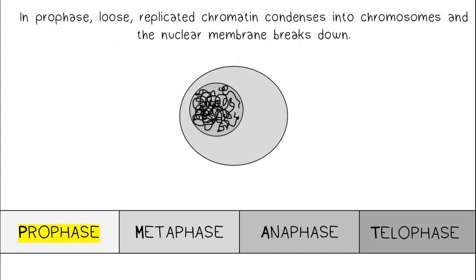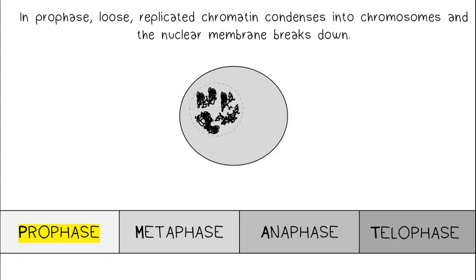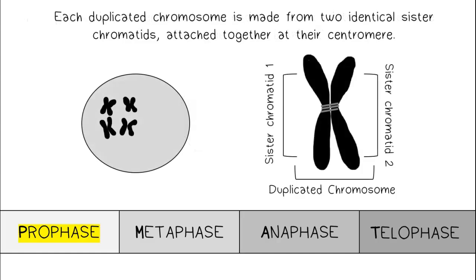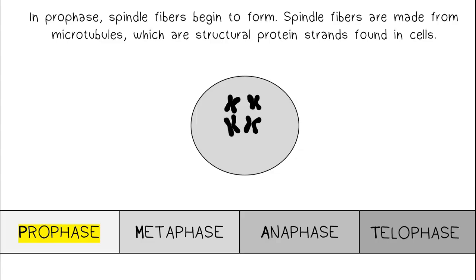In prophase, loose replicated chromatin condenses into chromosomes and the nuclear membrane breaks down. Each duplicated chromosome is made from two identical sister chromatids, attached together at their centromere. In prophase, spindle fibers begin to form. Spindle fibers are made from microtubules, which are structural protein strands found in cells.